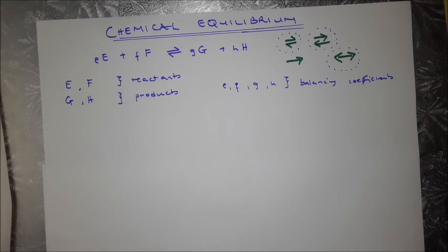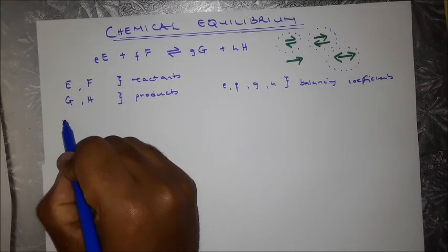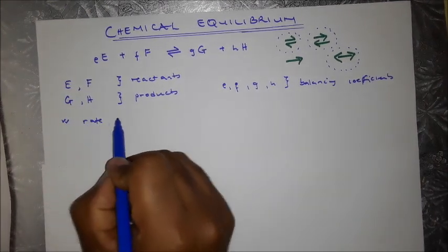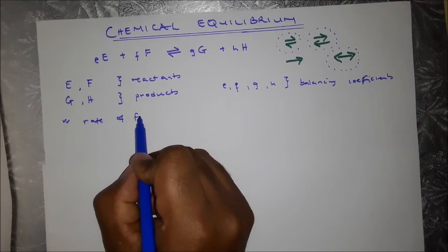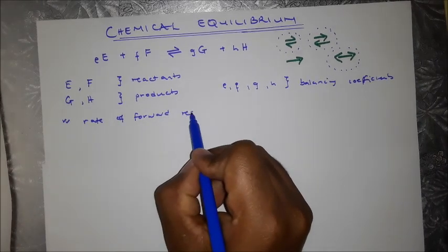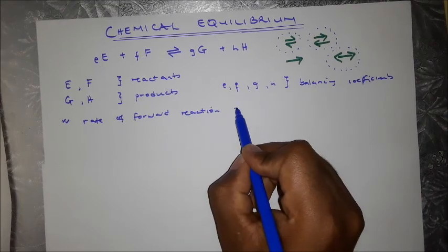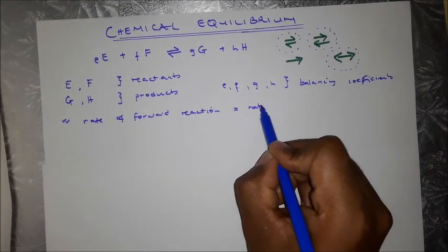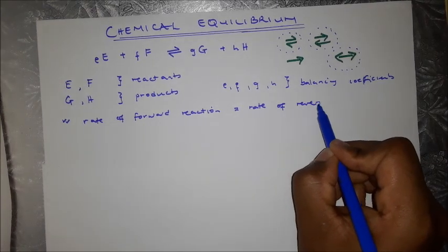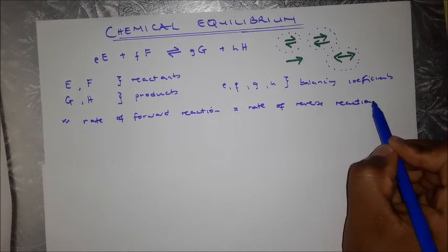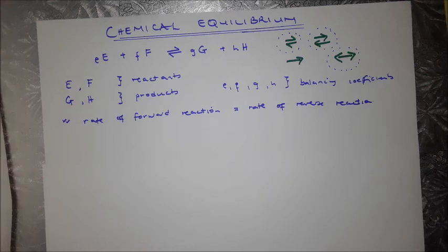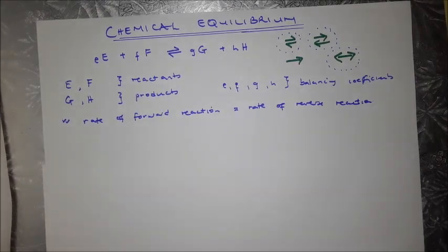When we speak of a reaction that is in chemical equilibrium — or sometimes you might be asked about dynamic equilibrium — what you must know is that the rate of the forward reaction equals the rate of the reverse reaction. That is very important.